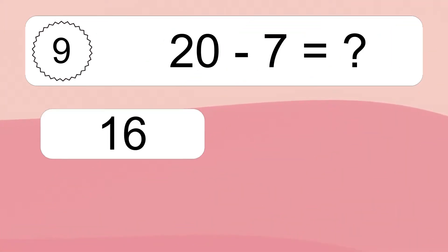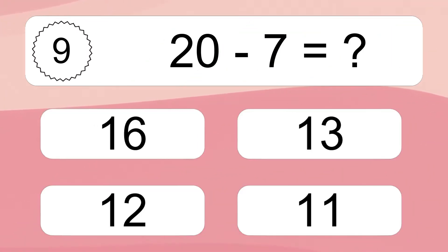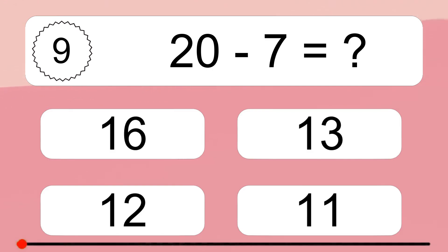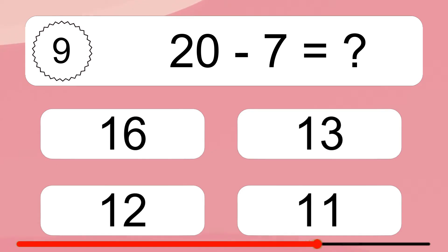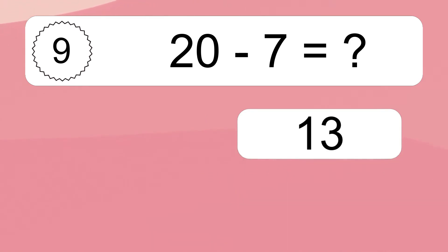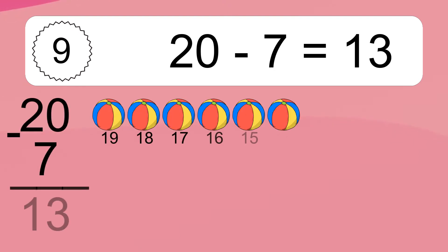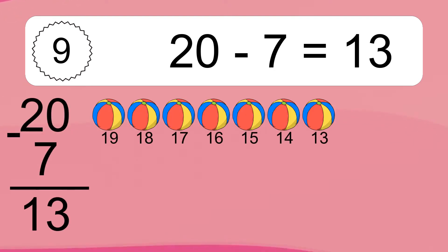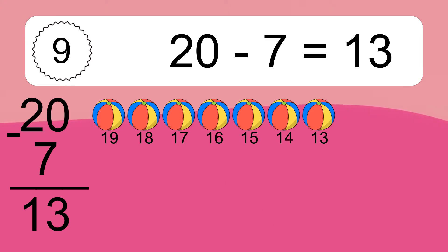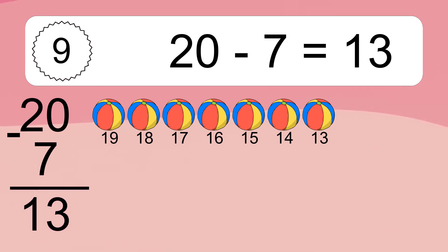20 minus 7 equals what? 20 minus 7 equals 13. Let's count it: 19, 18, 17, 16, 15, 14, 13.